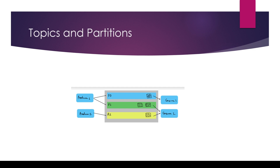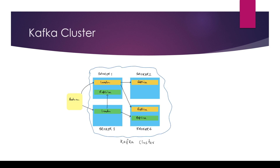Now consider this broker goes down — it had this topic with three partitions but crashed. We would lose that data. How do we avoid this? Kafka is a distributed system running on multiple nodes, so a Kafka cluster has different brokers — broker one, broker two, broker three, broker four, and so on. In this diagram we have two topics: the yellow-colored partitions belong to topic one and the green-colored belong to topic two. We see the concepts of 'leader' and 'replica.'